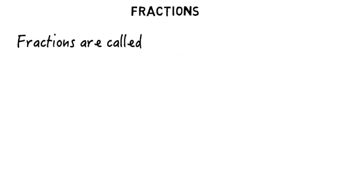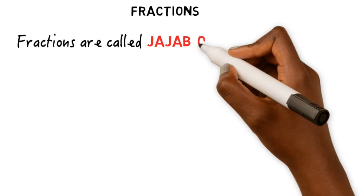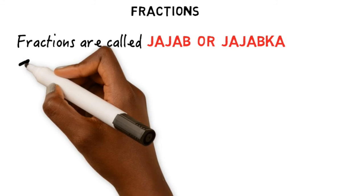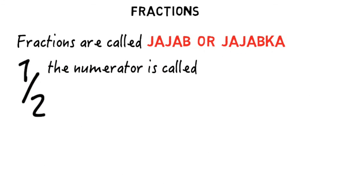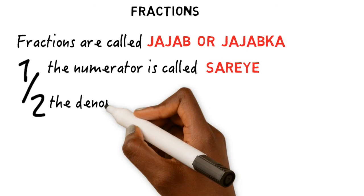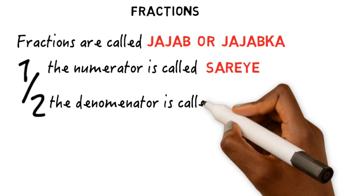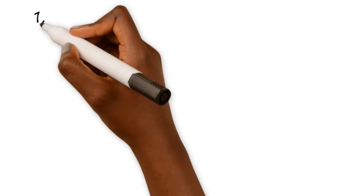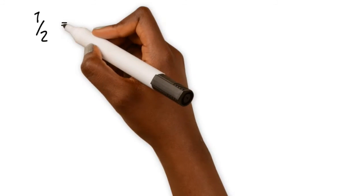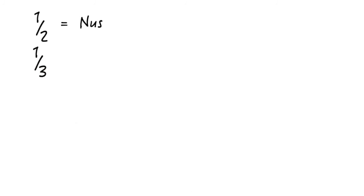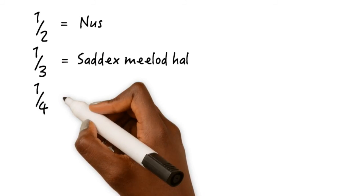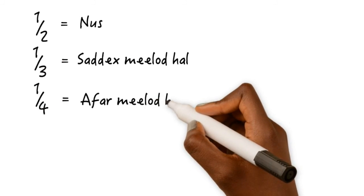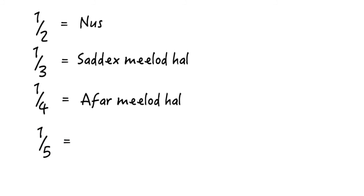Fractions are called 'Jejab' or 'Jejabka.' The numerator, or the top part, is called 'Zare.' The denominator, or the bottom part, is called 'Jose.' A number like 1 over 2 is called 'Mus' or 'Lawamelodhal.' 1 over 3 is 'Sadahmelodhal.' 1 over 4 is 'Aformelodhal.' 1 over 5 is 'Shanmelodhal.'